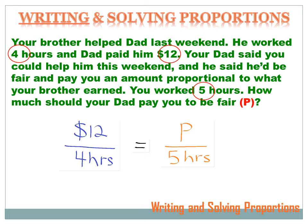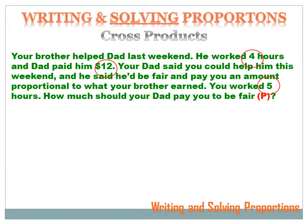$12 per four hours is equal to how many dollars per five hours. We can solve this problem a couple of ways. Let's try the cross product method first. You remember the cross product method — I set up the fractions, and then I multiply the numerator from the left fraction by the denominator on the right fraction, and set that equal to the numerator from the right times the denominator on the left.